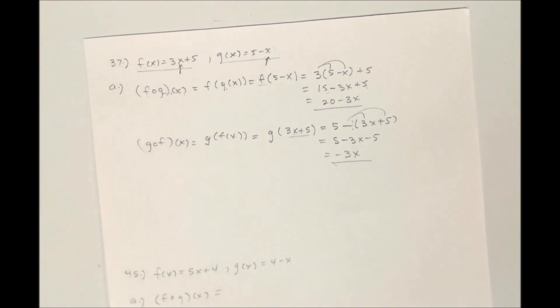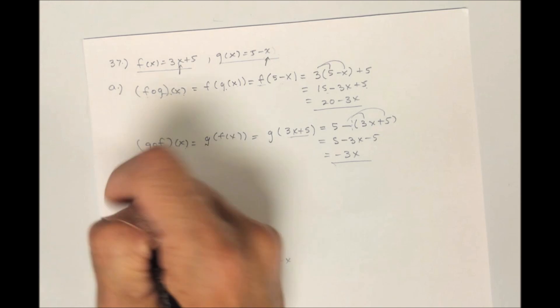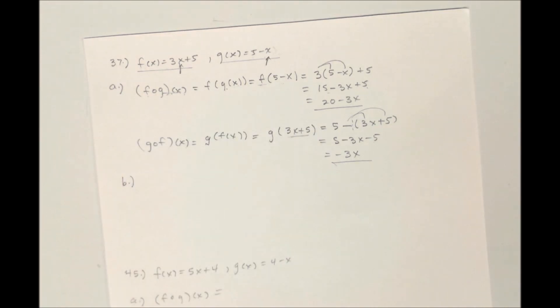And if I was to graph these for part B, I'll need to change my window. Let me bump my y values up here quite a bit — going to 20 by 5's, and negative 20 also by 5's.